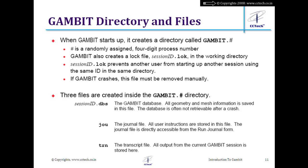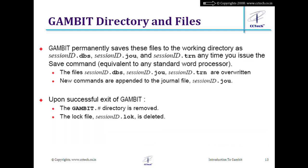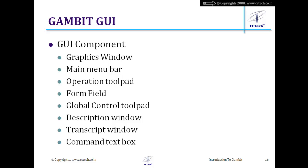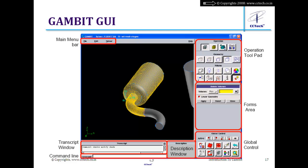So there are three files associated with GAMBIT: DBS, JOU, and TRN. Now let's look at the GAMBIT GUI. The journal file is particularly important — it enables automatic grid generation and parametric modeling. Let's have a look at the GUI.